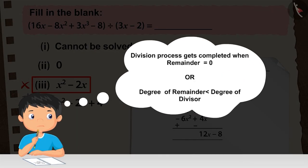Recall that when the remainder is 0 or the degree of the remainder becomes smaller than the degree of the divisor, then the division process ends.